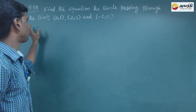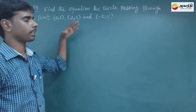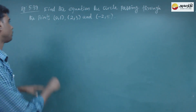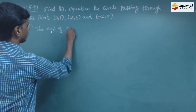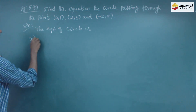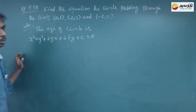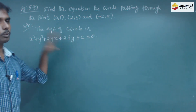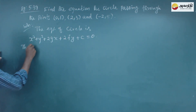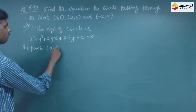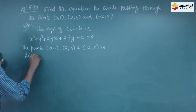Find the equation of the circle passing through three points. We will take the general equation of a circle, which is x² plus y² plus 2gx plus 2fy plus c is equal to 0. The three points are (0,1), (2,3), and (-2,5), which lie on the circle.